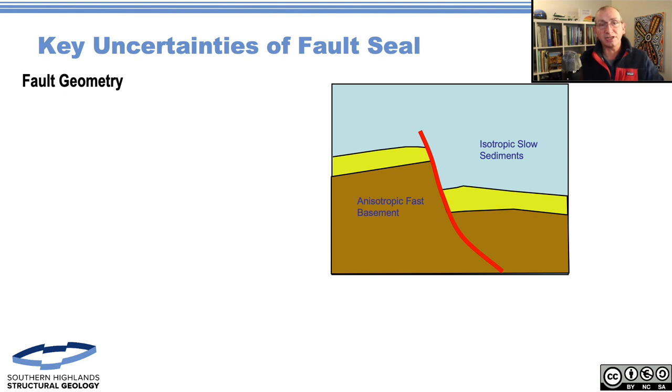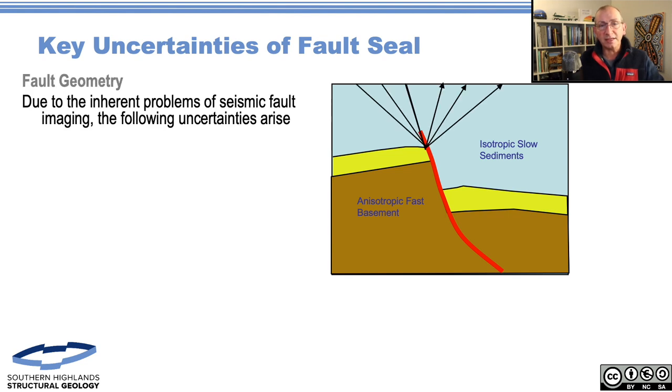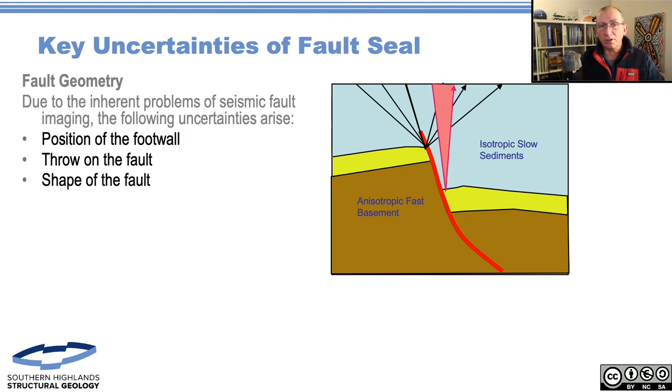When we're thinking about seismic, we can see pretty well what's going on in the footwall. We've got nice clear ray paths, maybe some fault shadow issues, but generally we can see it pretty well. It's much harder to see areas close to the hangwall where it's very hard to get a ray path down and back without it being significantly attenuated or modified by velocity contrasts.